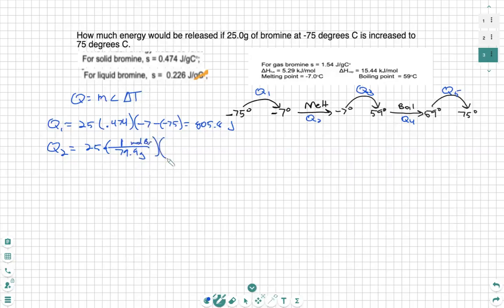The molar mass of bromine is 79.9 grams for 1 mole of bromine. This will, we can now convert that using the fusion that is necessary to melt. And that is going to be 5.29 kilojoules per each mole.